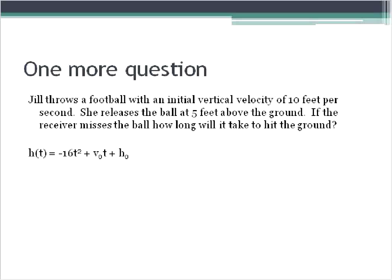All right, let's look at one more question. Jill throws a football with an initial vertical velocity of 10 feet per second. That's how fast it's going up and down. She releases the ball at 5 feet above the ground. If the receiver misses the ball, how long will it take to hit the ground? So we're looking for, again, the height is going to be equal to 0. We're looking for when it hits the ground. And we are not given the time, but we are given the initial velocity of 10, the initial vertical velocity of 10 feet per second. And it starts at 5 feet above the ground.